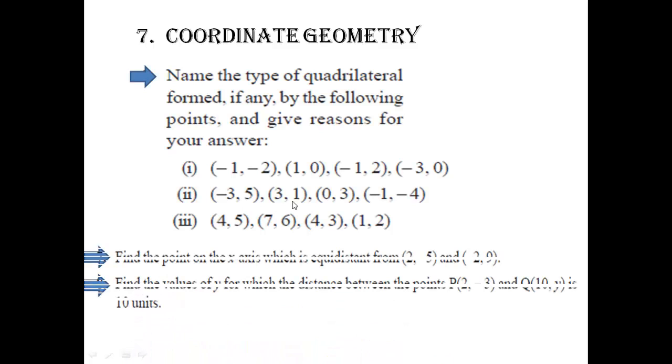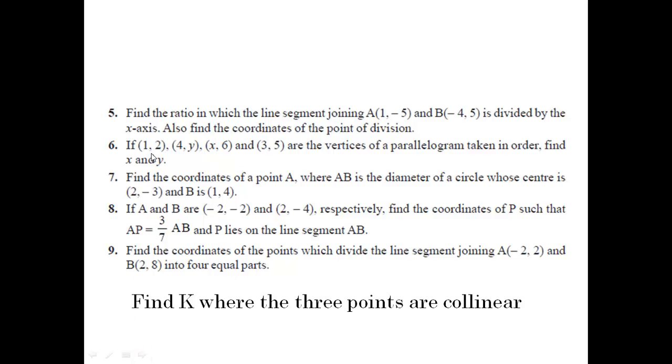Now we are moving towards coordinate geometry. In coordinate geometry generally they are asking questions from the textbook only, or they can ask one or two questions from outside. Otherwise they are generally just changing the numbers. The type of questions include: finding the type of quadrilateral — you have to find all the sides. They are not going to ask you simple questions like find the midpoint; they are going to ask you to find a point on the x-axis or y-axis.